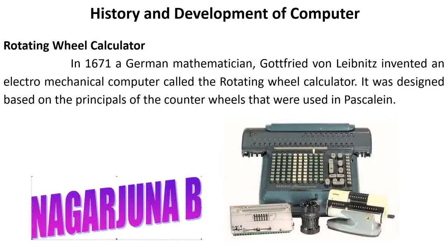Next is the rotating wheel calculator. In the year 1671, a German mathematician Gottfried von Leibniz invented the first electromechanical computer called the rotating wheel calculator. This was developed by considering the principles of the counter wheel used in the Pascaline, invented by Blaise Pascal.